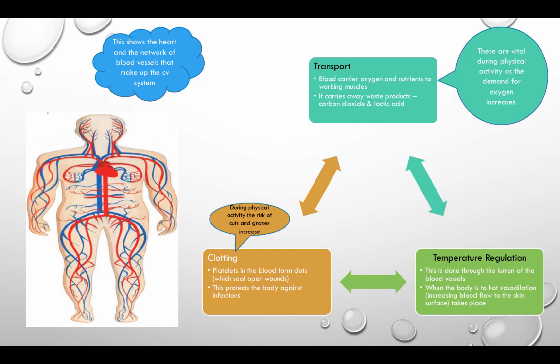Another role is temperature regulation. This is done through the lumen of the blood vessels. When the body is hot, vasodilation — an increase of blood flow to the skin surface — takes place. Clotting: platelets in the blood form clots which seal open wounds. This protects the body against infections. During physical activity the risk of cuts and grazes increases, therefore clotting is a vital part to ensure that infection doesn't happen.